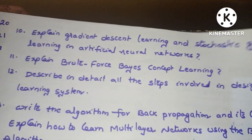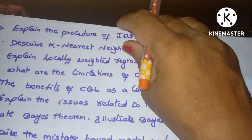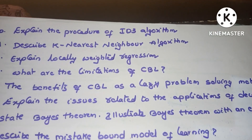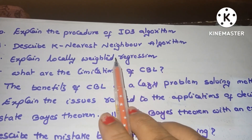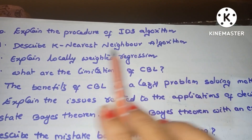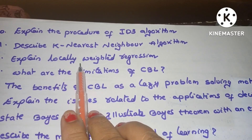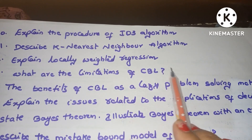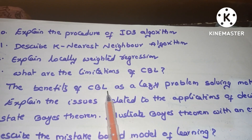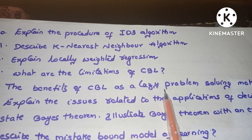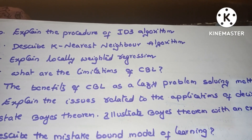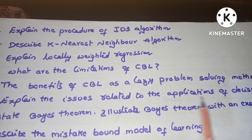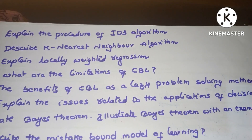These are the important questions for units two and three. Next one is: explain the procedure of the ID3 algorithm. Next, describe the K-nearest neighbor algorithm. Explain locally weighted regression. What are the limitations of CBR? The benefits of CBR as a lazy problem-solving method. Explain the issues related to the applications of decision trees.